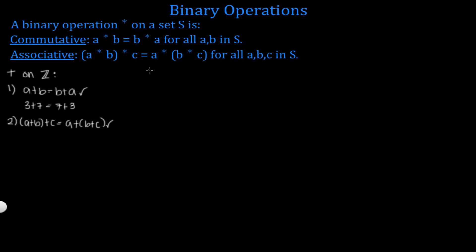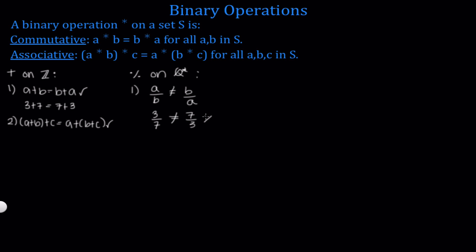This was a simple example. Let's look at division on the set of non-zero rational numbers. In order for this to be commutative, we would need A divided by B to equal B divided by A. But we can see this is not true. For a counter example: 3 divided by 7 and 7 divided by 3 are clearly not equal. This shows that division is not commutative on the set of non-zero rational numbers.